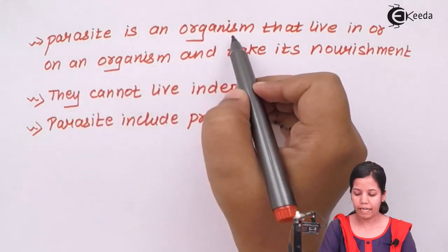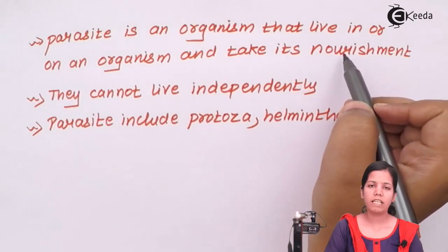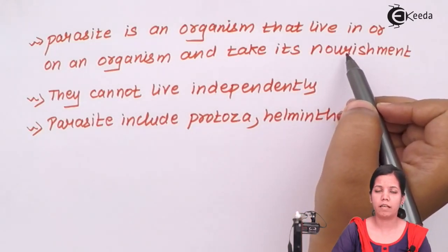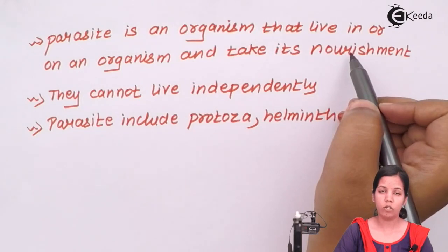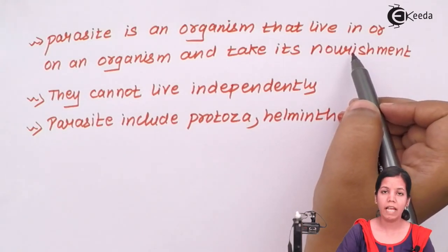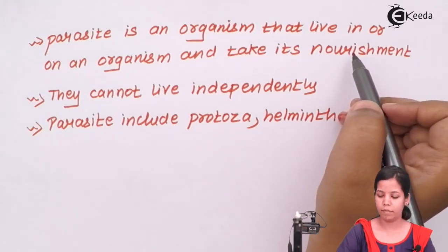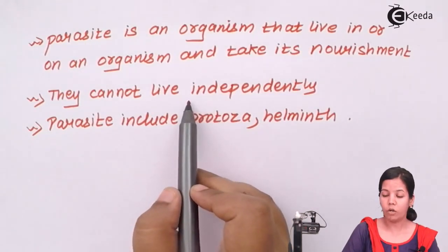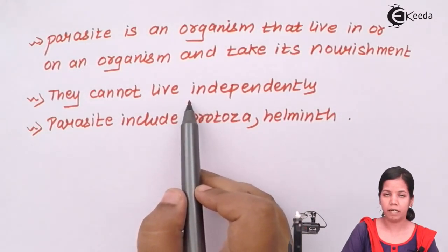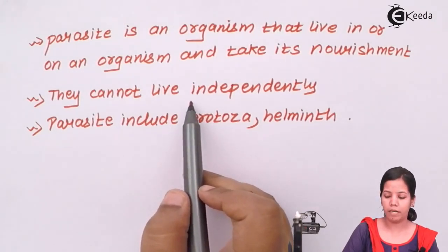Parasites are those organisms that live in or on an organism and take nourishment or nutrition from it. For example, the malarial protozoan parasite lives inside the human host. Whenever you get a malarial infection, the female Anopheles mosquito, carrying the protozoan, bites a human individual and it is transferred inside the human host, reaches the liver, does its multiplication, and obtains nutrition from the human host. These parasites can never live independently — they always need a host to survive and thrive, especially for their food requirements.